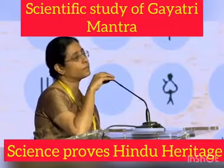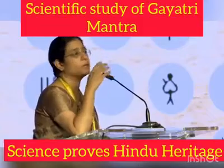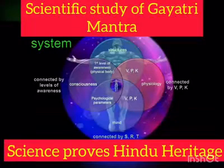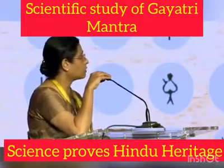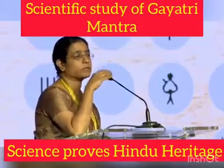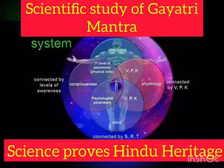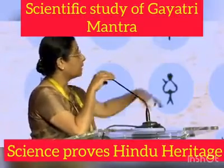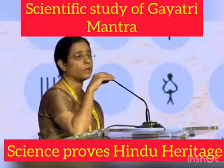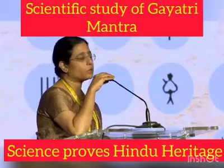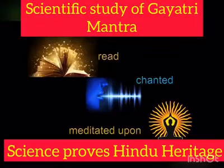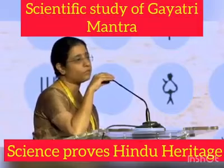The best way to understand this is to see how Ayurveda, which is again a part of the Veda, understands and perceives the human system. There are four domains that Ayurveda uses: a structural domain, a physiological domain, a psychological domain, and a domain of consciousness, which is the subtlest one. The structural domain is interconnected using various channels called srotas — these can be blood vessels, lymphatic vessels, or nerves. The physiological domain is networked by parameters defined by Vata, Pitta, and Kapha, which are subclassified into 15 types each.